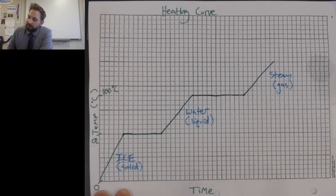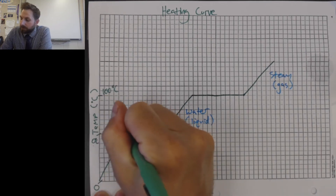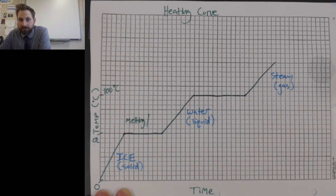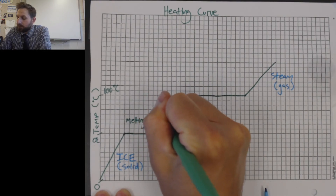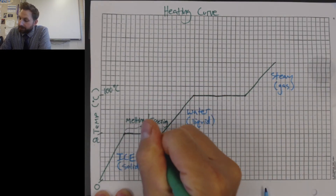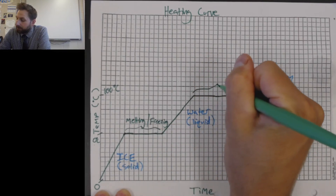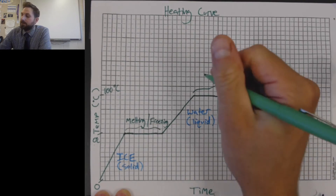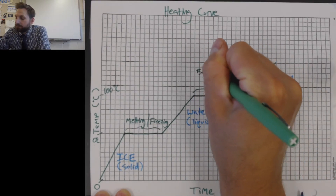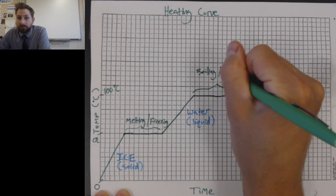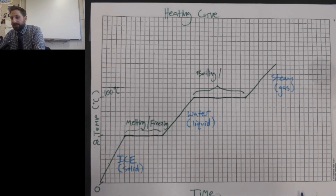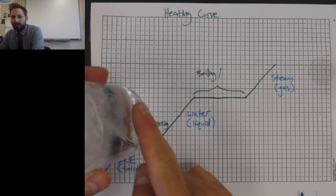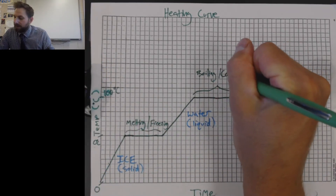The plateaus are interesting. On the first plateau you would have melting, and the opposite of melting is freezing. On the second plateau we'd be going from liquid to a gas — that's boiling. And the opposite of boiling is condensation. You can actually see it on the outside of this glass — it's all wet. Where'd that water come from? That's condensation.